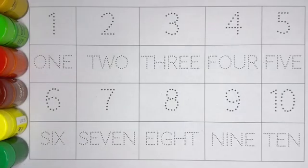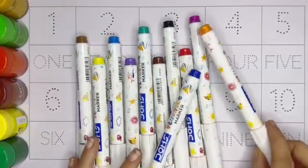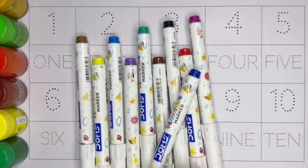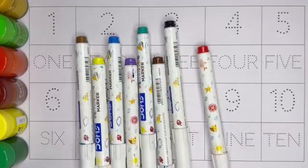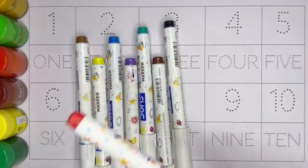Let's learn name of the colors kids. These are the colors. Orange color, blue color, dark pink color, red color,